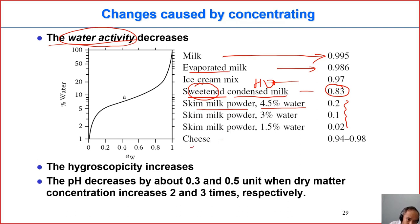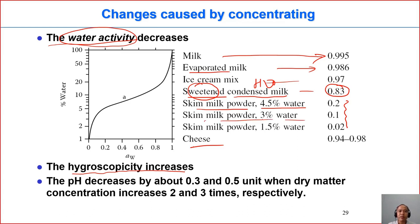This also applies to cheese. So the first effect is a reduction in water activity. The second effect is that the product becomes more hygroscopic — it has a higher capacity to absorb vapor from the air. For example, skim milk powder: if you open the bag, it may absorb vapor from the air very fast.